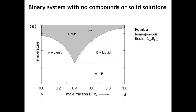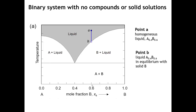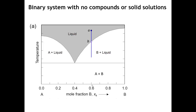Then we have this curved line which separates the pure liquid region from the rest of the phase diagram — we call that the liquidus. Let's take a random point A on this phase diagram, which on the x-axis corresponds to 0.6, so the composition is A=0.4, B=0.6. At high enough temperature we have a homogeneous liquid. As we cool down and reach the liquidus line, the liquid is in equilibrium with solid B. Cooling a little further to point C, we're in a two-phase region with an equilibrium mixture of B plus liquid, but the liquid now has a different composition.